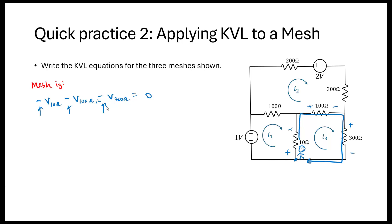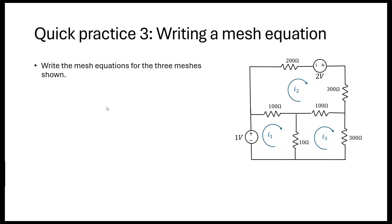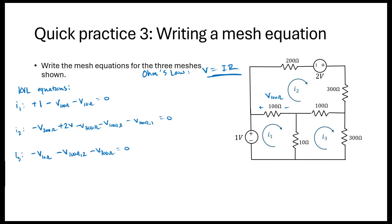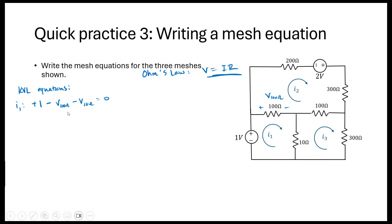Now, our goal for mesh analysis is to write equations in terms of current and solve for the unknown mesh currents. So let's take the Kirchhoff's voltage law equations we just wrote for the three meshes and rewrite them as mesh equations using Ohm's law.